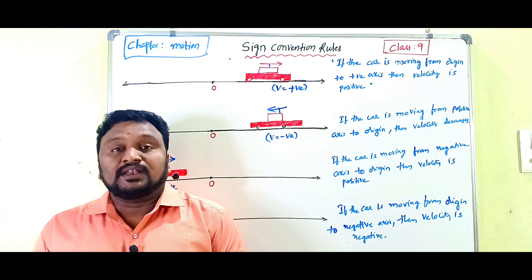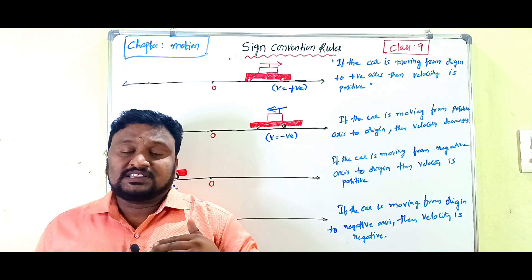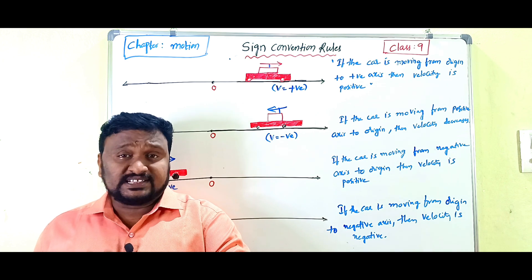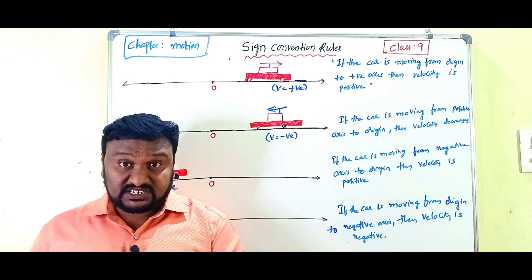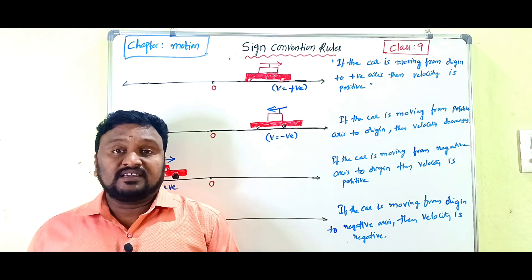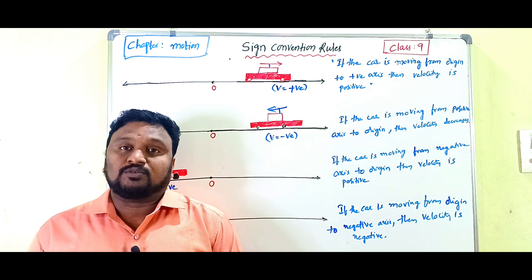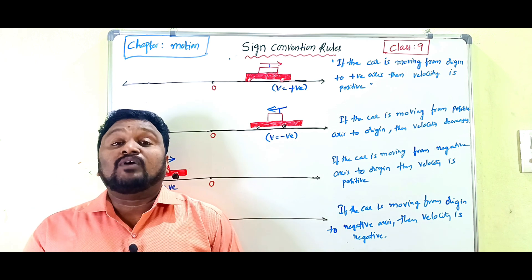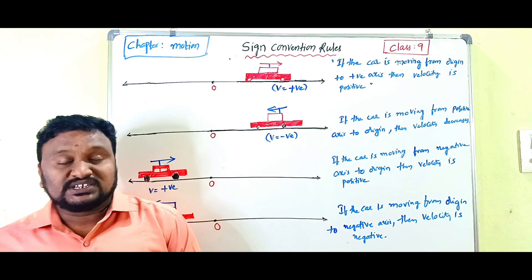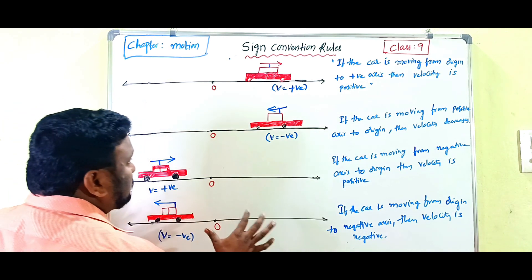Now, sign convention rules for velocity and acceleration. We discussed when displacement is positive, negative, or zero. Now which rules do we follow to determine whether velocity is positive or negative? Let's go further. On the board, some diagrams are there which we have to observe very carefully. O is the origin, and we have the positive axis shown.